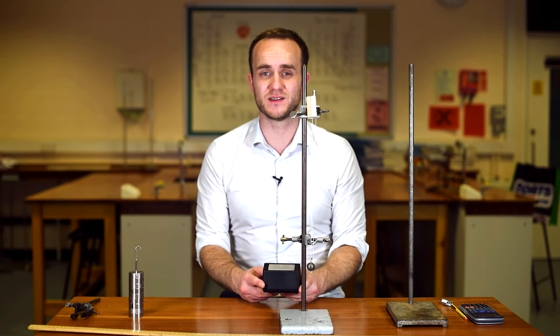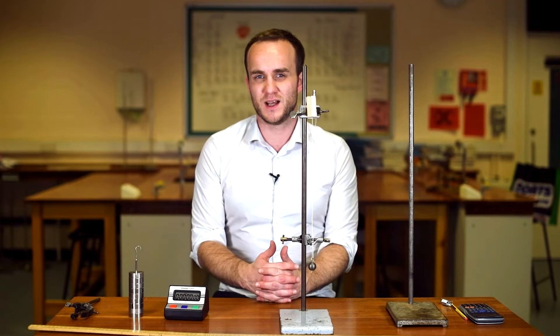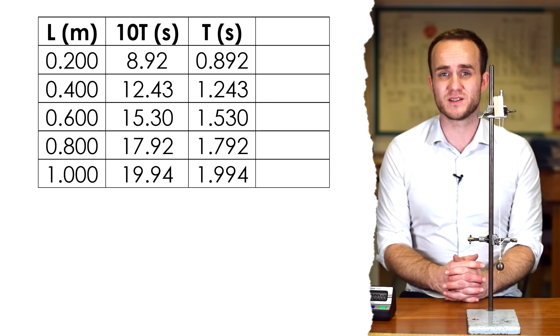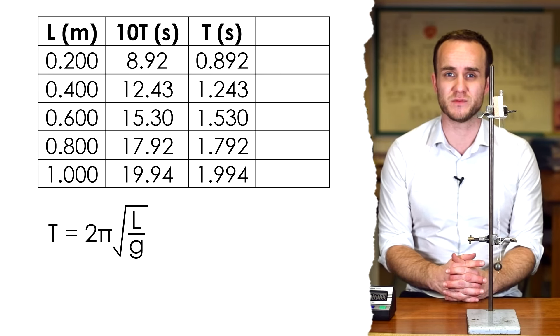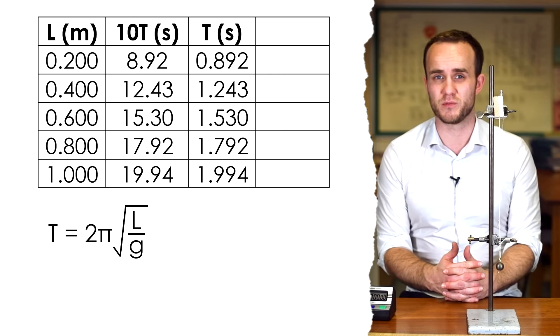I then want to change the length and do the same again. So here are my time periods for all my different lengths. I've just gone 20 centimeters, 40, 60, 80, 100. Now the equation, like we said, is t equals 2π root l over g, where l is the length of the piece of string. So we can't draw a graph of t against l because they're not proportional.